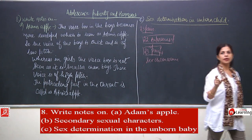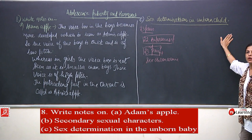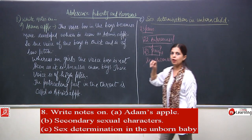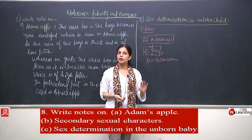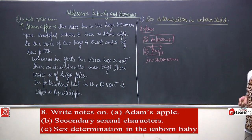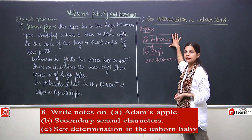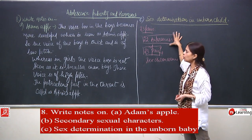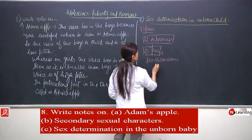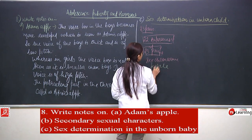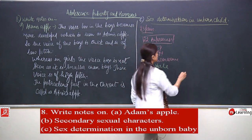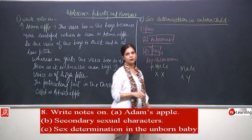We are discussing sex determination in the unborn child — what decides whether a child will be a girl or a boy. In the nucleus of every cell, chromosomes are present. Humans have 23 pairs of chromosomes; 22 pairs are exactly the same and are called autosomes, while one pair is different and is known as the sex chromosome. The sex chromosome is different in males and females: in females it is XX, while in males it is XY.